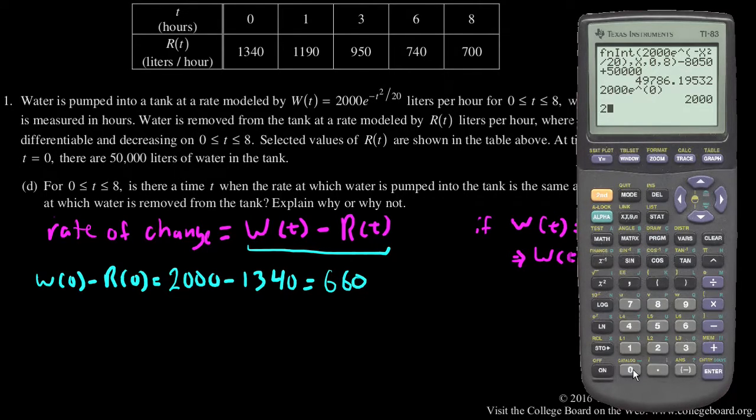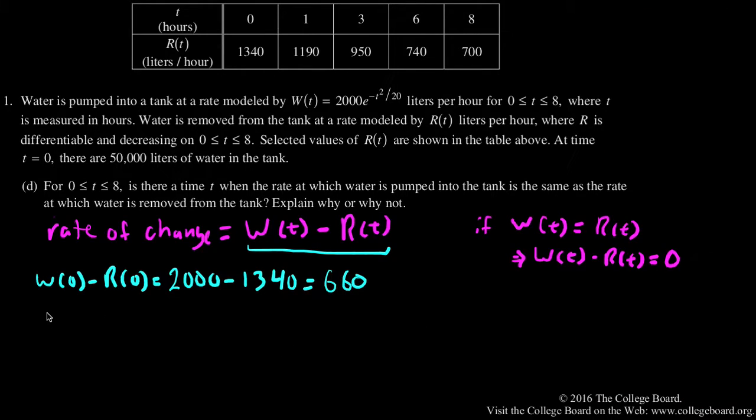W of 8 will be 2000 times e to the negative 8 squared divided by 20, which gives me 81.524.